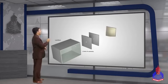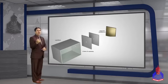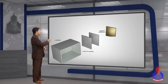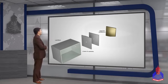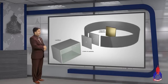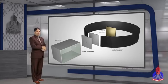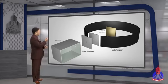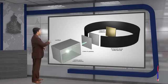اس کے بعد ہمارے پاس gold foil ہے جس کی thickness point 00000 four centimeter ہے، انتہائی باریک۔ اس کے چاروں طرف ہم نے ایک circular plate لگائی ہے جو zinc sulfide سے coated ہے۔ یہ ہمارا experiment ہے۔ اب working اور observations دیکھتے ہیں۔